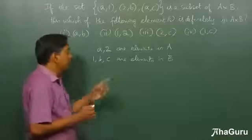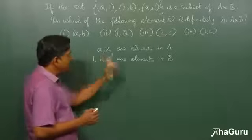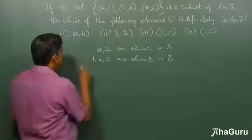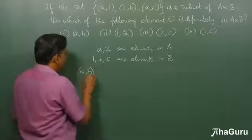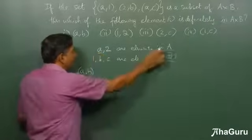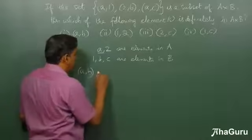So now the question is, which of these is definitely there? Let's take (a,b). Well, a is an element in A and b is an element in B, so this is definitely part of A×B.